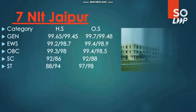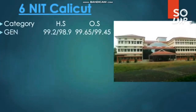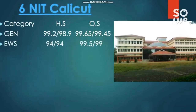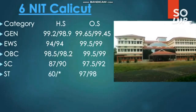The next NIT — number 6 — is NIT Calicut. Here is the cutoff for all categories: General, 99.65 and 99.45 for male and female. EWS: 99.5 and 99. OBC: 99.5 and 99. SC: 97.5 and 92. ST: 97 and 98 percentile is required.